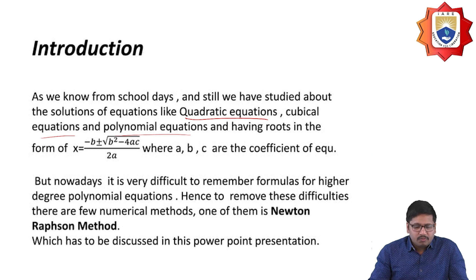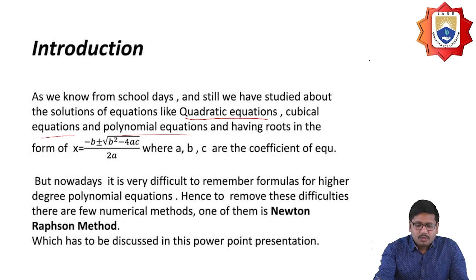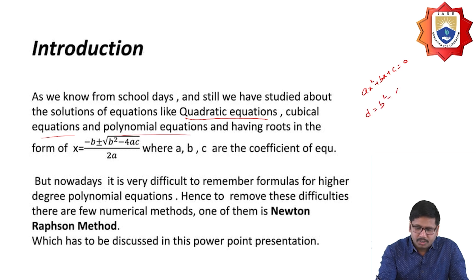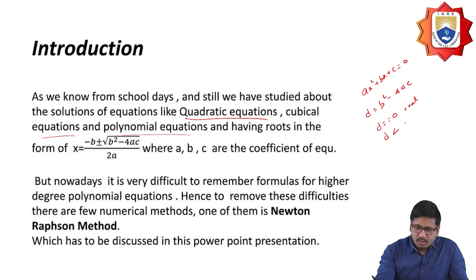One of those numerical methods is the Newton-Raphson method. For a quadratic equation ax squared plus bx plus c equal to 0, we calculate the discriminant D equal to b squared minus 4ac. Whenever this discriminant value is equal to zero, the roots are real and equal. Whenever the discriminant value is less than zero, the roots are imaginary.